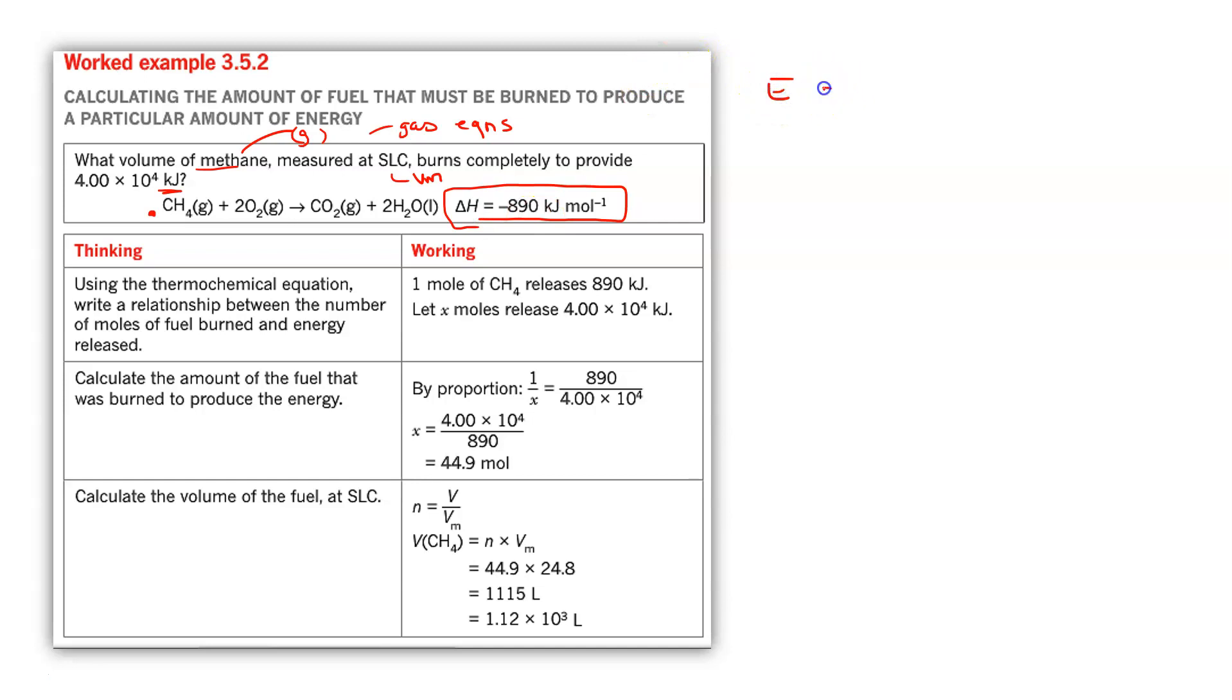So I'm going to be using the idea that E is equal to N times delta H. So I can substitute in the amount of energy that I want to find, which is 4.00 times 10 to the 4 kilojoules is equal to N times 890 kilojoules per mole. So what you can see here, we're going to solve for N. N is going to equal E divided by delta H, which is going to be 4 times 10 to the 4 divided by 890, which is going to be 44.9 mole, as we see here.